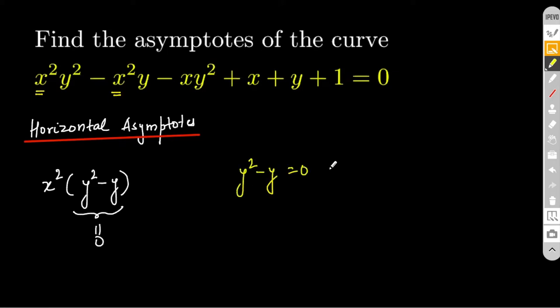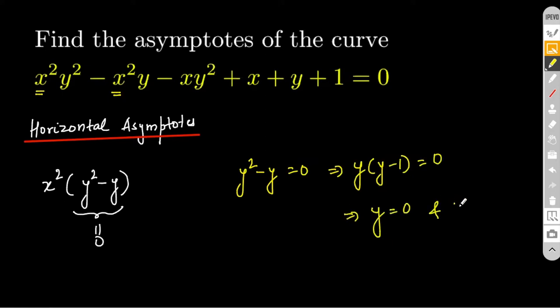Once you get it to 0, you end up getting y(y−1) = 0, which clearly implies y = 0 and y = 1. So these two horizontal lines are basically the horizontal asymptotes for this equation.